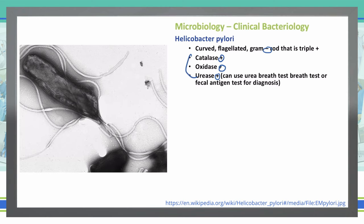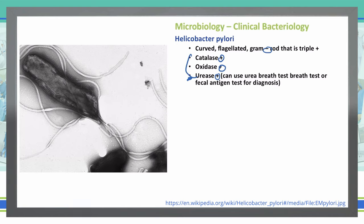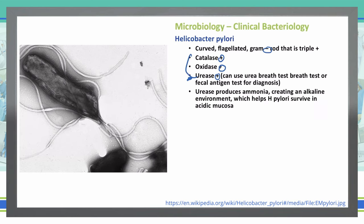The urease in particular is important because we can use that to help detect the presence of this infection. We do a urease breath test where we give a patient a small sample of urea, and then we test their breath to see if it has any urea broken down by the H. pylori, which can help us diagnose this. The urease will produce ammonia that creates an alkaline environment, helping H. pylori survive the acidic environment in the stomach.